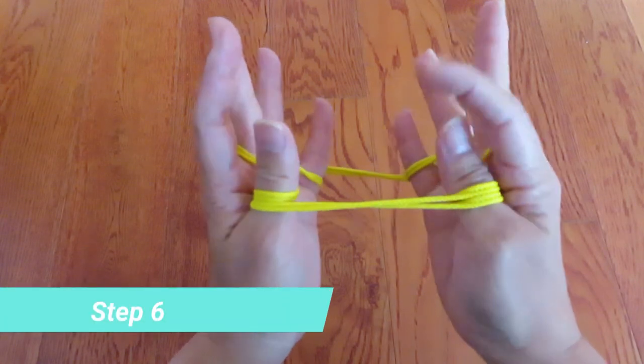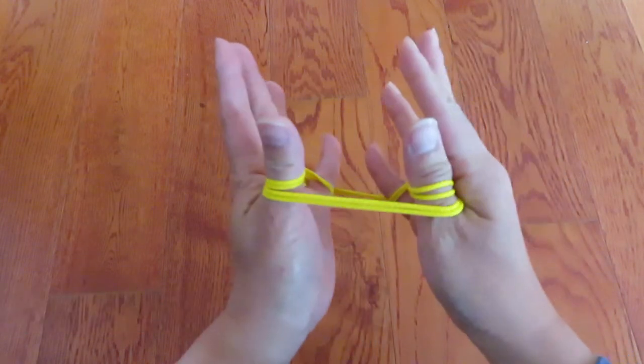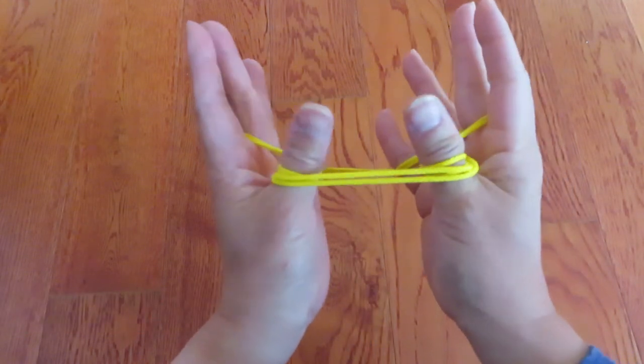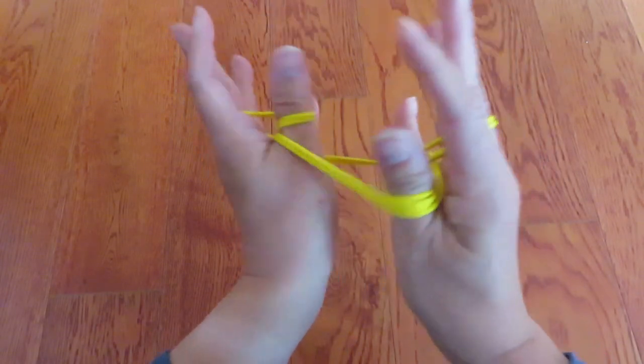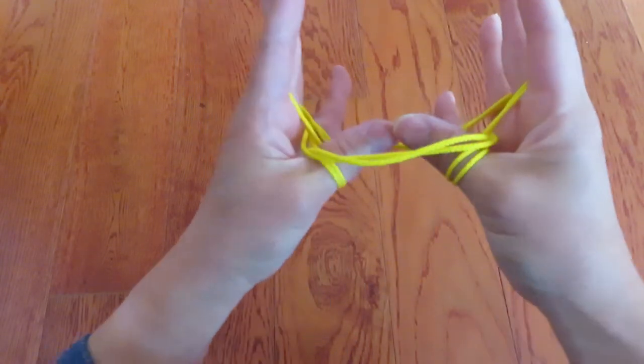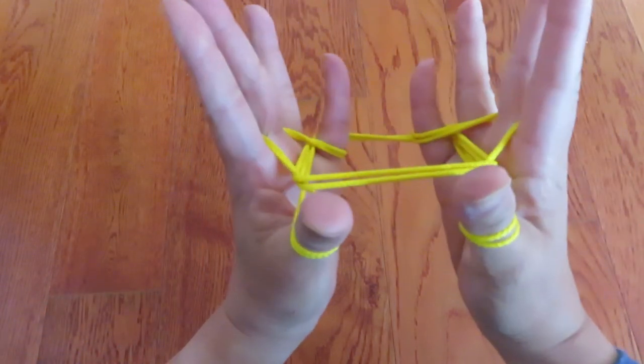And now, there are these double straight strings in front of two thumbs. Now, keeping those, these strings go under the straight strings like this.